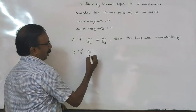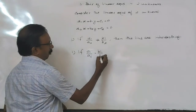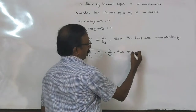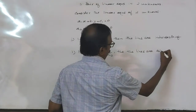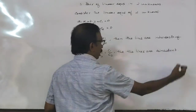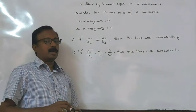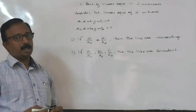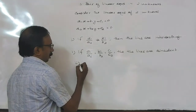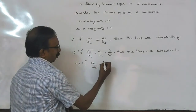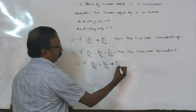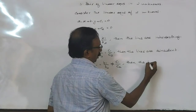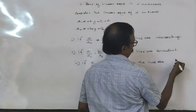If a1 by a2 is equal to b1 by b2 is equal to c1 by c2, then the lines are coincident. The condition for coincident lines is a1 by a2 is equal to b1 by b2 is equal to c1 by c2.